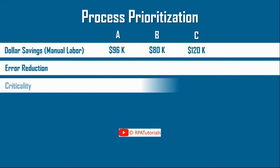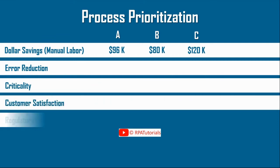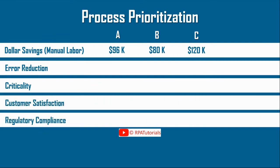Rank the other business priorities on a scale of 0 to 5. 0 to 1 could mean no or insignificant business priority, 2 to 3 indicates medium priority, and 4 to 5 indicating high business priority for that process.